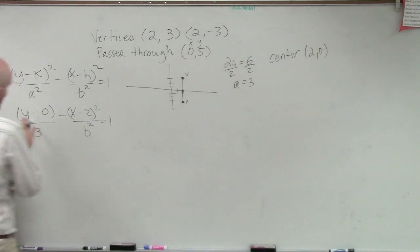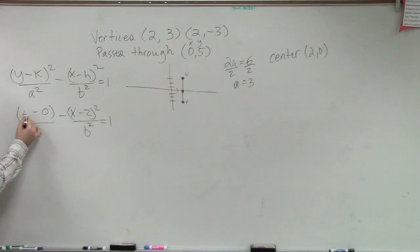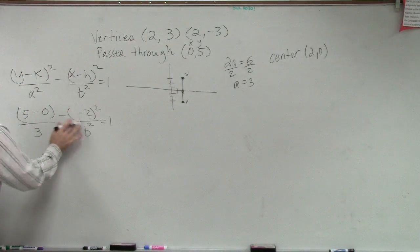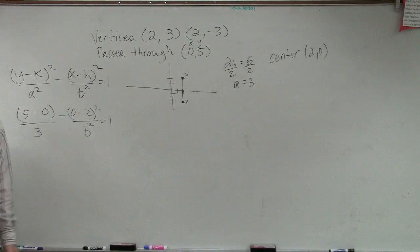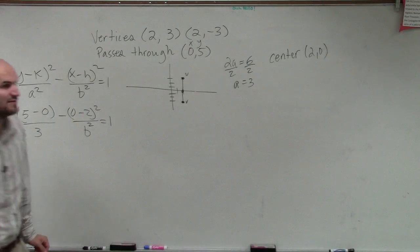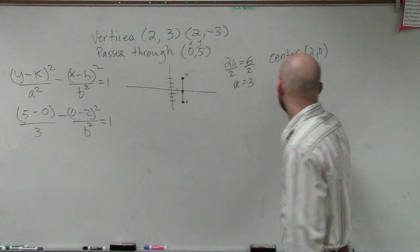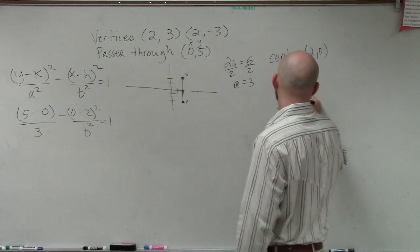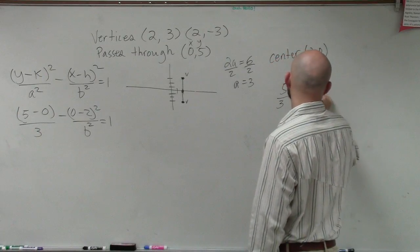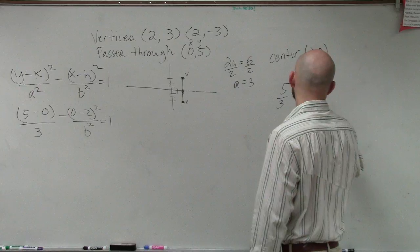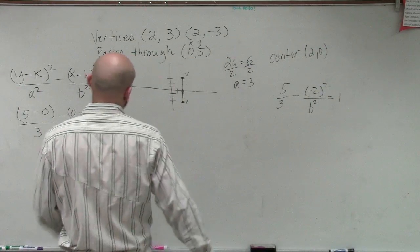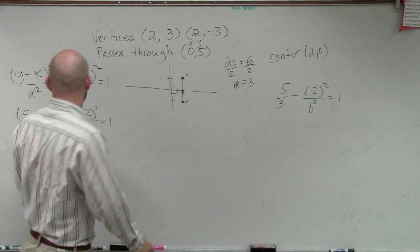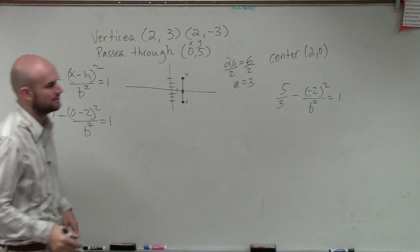So let's put in 5 for y and 0 for x. Now is this something that we can solve for b? Yeah, it's going to be a little bit of algebra, but we can do it. So we'll have (5-0)²/9 - (0-2)²/b² = 1. Student asks: Wouldn't a be squared? Yes, that's a, so that's 9, right? That's 3 squared.